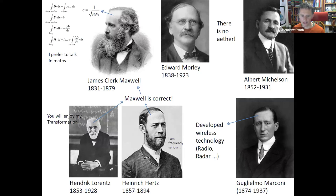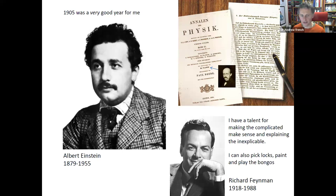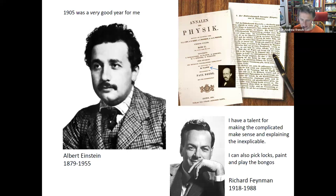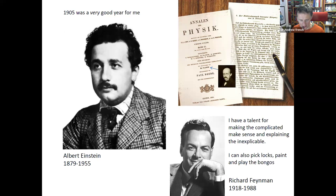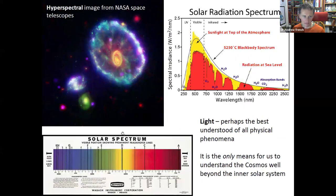Then we have James Clerk Maxwell, Edward Morley, Michelson, Marconi, Hertz, and Lorentz. This is really about electromagnetism, because it all relates to the speed of light being a constant — a fundamentally strange idea, but true. We have to modify our mechanics to take this into account. And here's Albert Einstein as a young man in 1905, his annus mirabilis — three classic papers, and later the Nobel Prize. Max Planck was actually the editor of the journal where Einstein published his key paper.